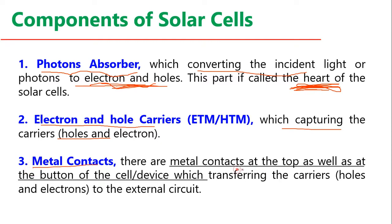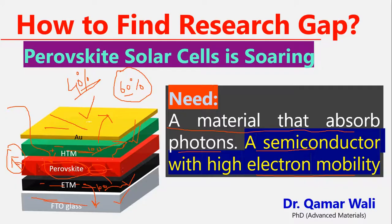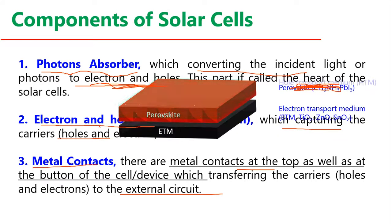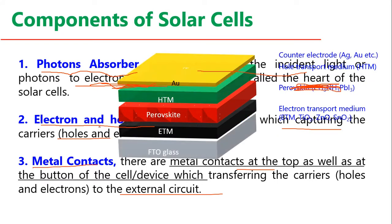The metal contacts at the top and bottom transfer the carriers to the external circuit. For example, we are currently using gold, but gold is very expensive, so we can look for a replacement. The contact material also needs to be transparent to allow light in.